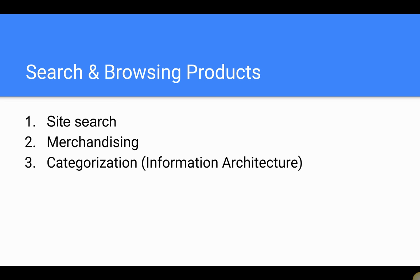Categorization, also known as information architecture. This is very similar to walking into a grocery store — you have your meat department, your deli, your frozen foods aisle, your bread aisle. The same thing goes for any e-commerce website. Break down your categories. If a user doesn't know what they're looking for, let them browse your aisles. Having that very clean categorization broken down for them is really important, so products are easy to find.